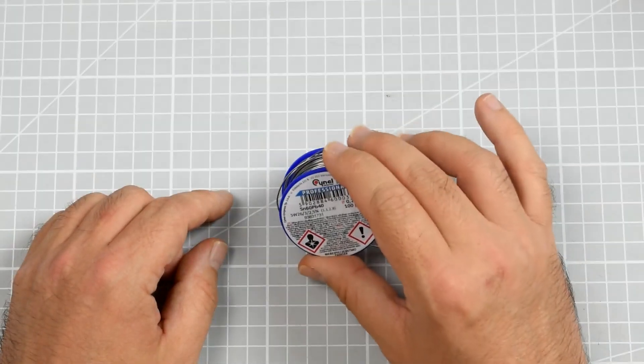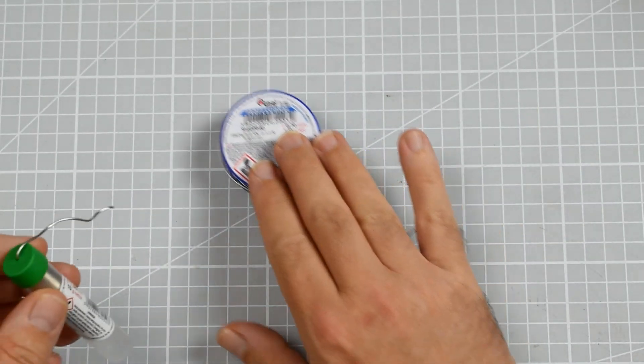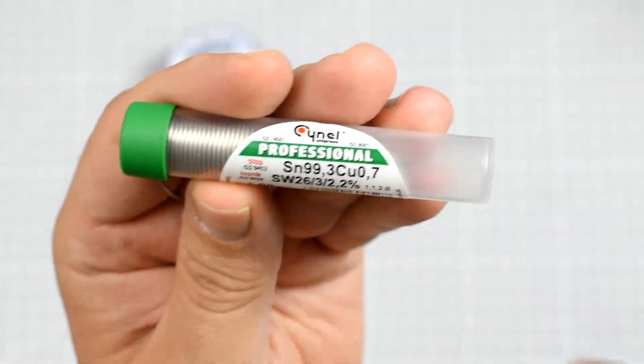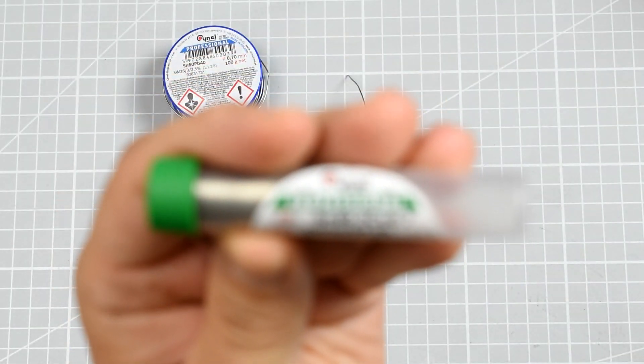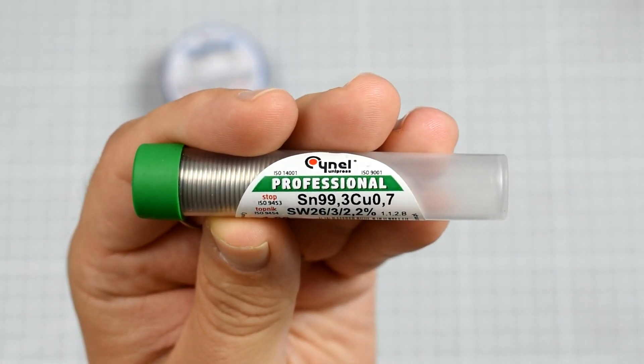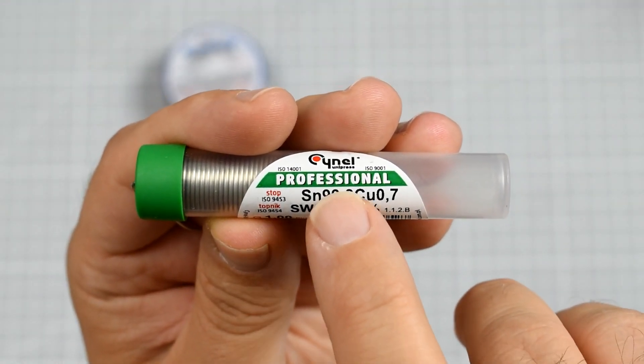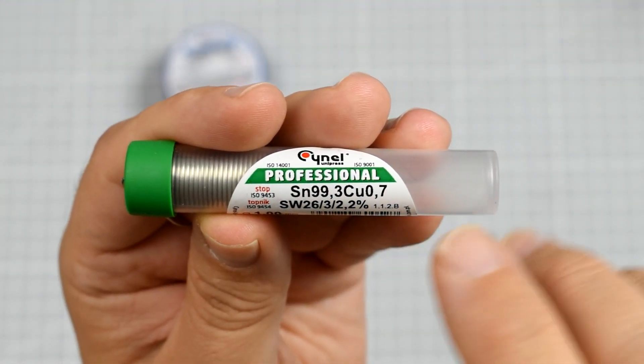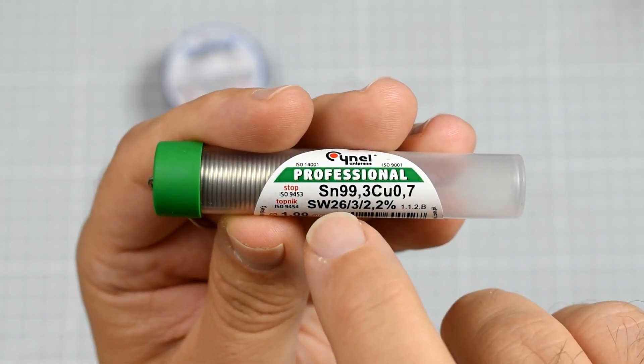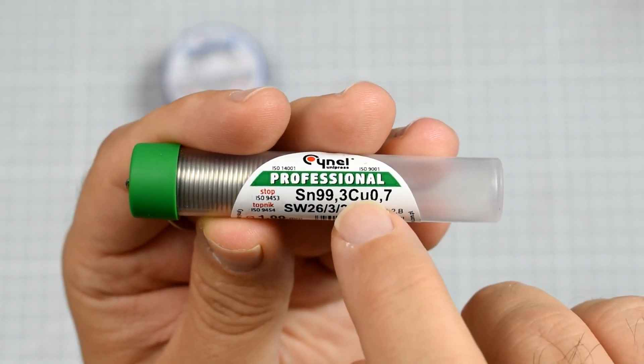So instead of only using this one, I went shopping and got this thing. This is only a sample, so it's a relatively small package. This is also made by Cynel—I love Cynel products. SN99, that means it contains 99 percent, around 99.3 percent tin and 0.7 percent copper.